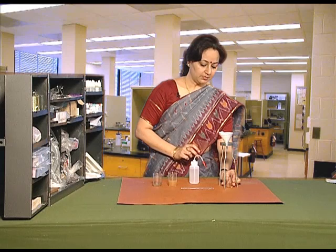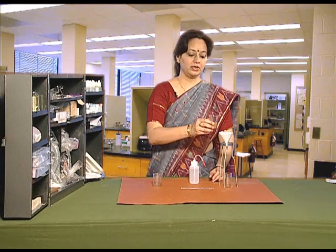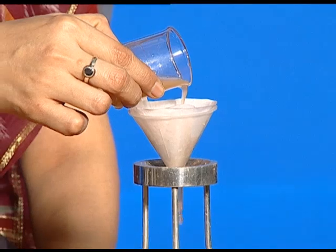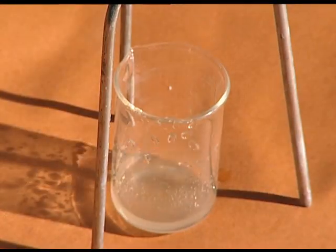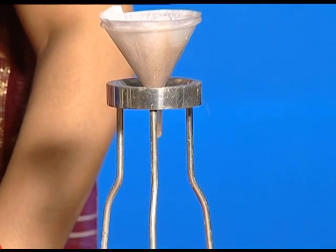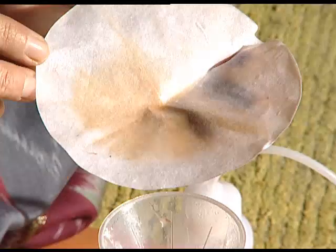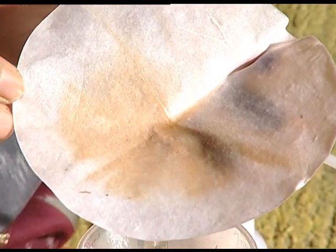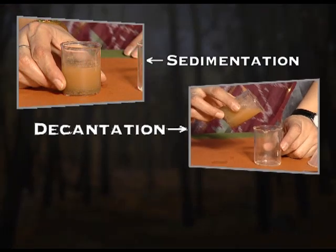Take an empty beaker and pour the water from the first beaker into the funnel. We observe that clear water comes into the beaker as filtrate, and the mud remains on the filter paper as residue. In this way, we can separate mud from muddy water by following three steps: sedimentation, decantation, and filtration.